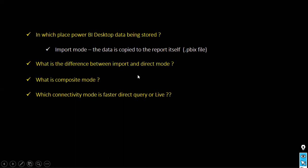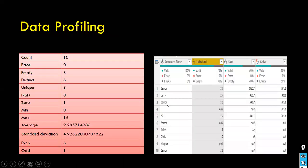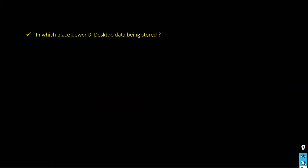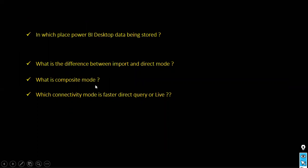Composite mode — also called dual mode — is a mix of both import and direct query mode. In the data model, you can see tables color-coded: blue for direct query, others for import. Hovering over a table shows its storage mode. Dual mode tables are shown with dotted lines on top.